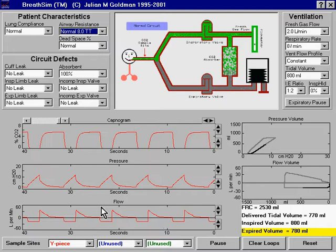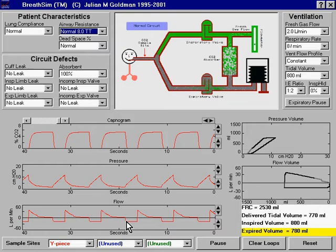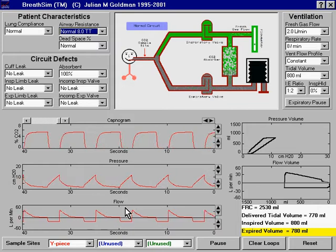And here's the normal flow waveform. The inspiratory portion is below the horizontal black line, and the expiratory portion is above the horizontal black line.